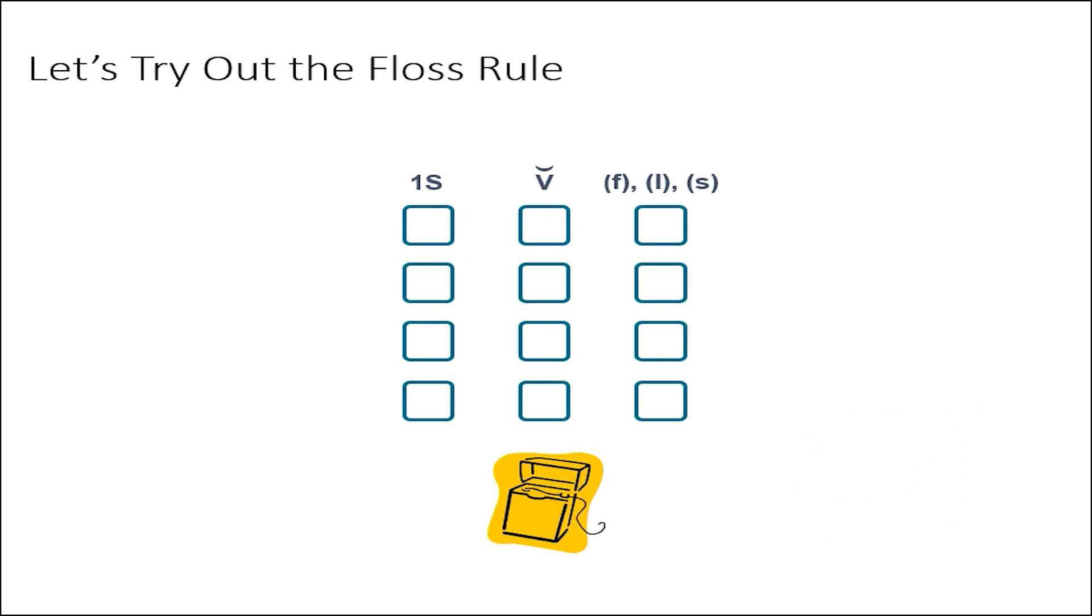The first word is glass. Does it have all the checkpoints? Does it have one syllable? Yes. Does it have a short vowel? Yes. Is final F, L, or S right after the short vowel? Yes. We would double the final S when spelling this word.